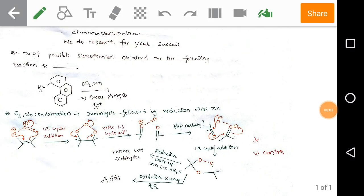Hi, welcome to ChemOsis.online. We do research for your success. Now we are discussing GATE previous year solved problems. Just look at the given problem: the number of possible stereoisomers obtained in the following reaction.